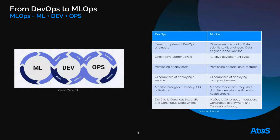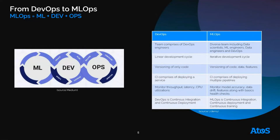In DevOps, continuous deployment is about deploying a service. In MLOps, continuous deployment is about deploying multiple pipelines. In DevOps, you monitor throughput, latency, and CPUs. In MLOps, you monitor instead accuracy, model, and data drift. Finally, DevOps is continuous integration and continuous deployment, whereas MLOps is continuous integration, continuous deployment, and continuous training.